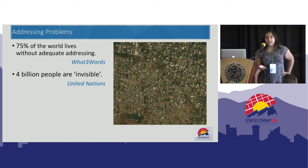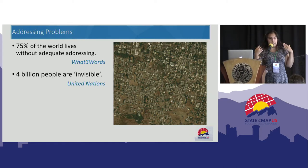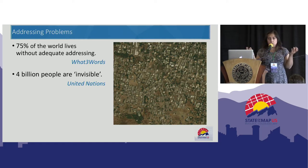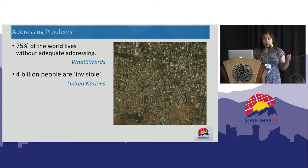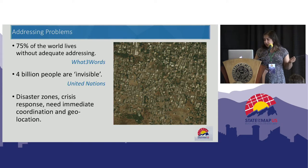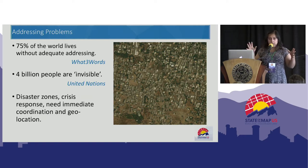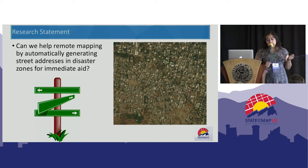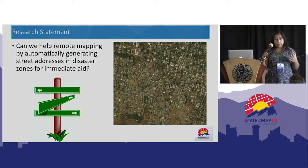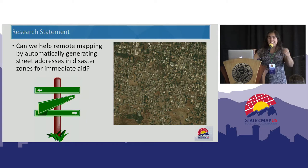Because of that, the United Nations says those people are invisible. The infrastructure is not there, the crisis response is not there, and all the things we have cannot reach them because there's no addressing. In disaster zones, crisis response needs immediate coordination and geo-location, and that needs to be generated on the fly. So can we help remote mapping by automatically generating street addresses in disaster zones for immediate aid?